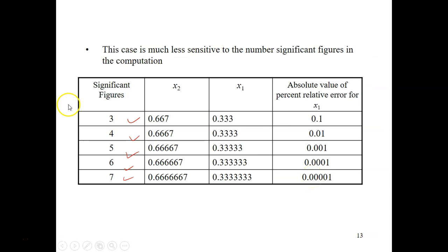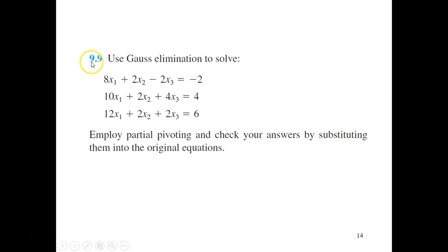By using more significant figures combined with partial pivoting, we can overcome the round-off error problems. This approach also helps overcome ill-conditioned system issues.